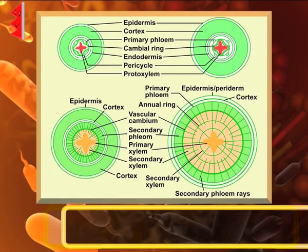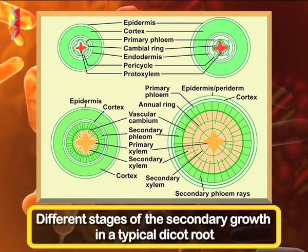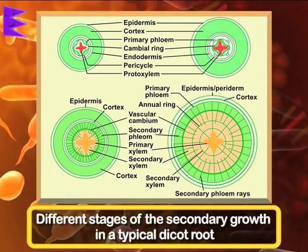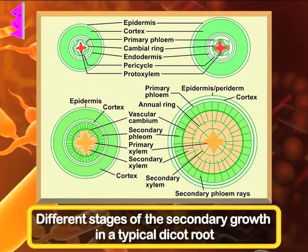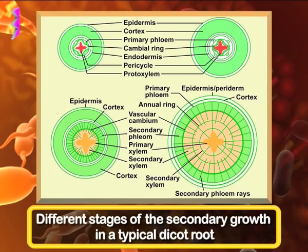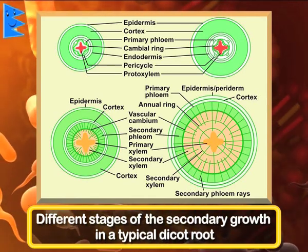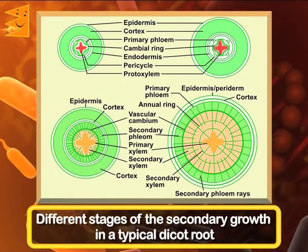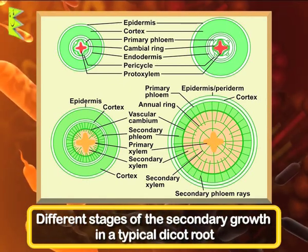Secondary growth in roots is quite similar to secondary growth in stem. You can see in the diagram: epidermis, cortex, primary phloem, primary xylem, cambial ring, endodermis, pericycle, and proto xylem are present.